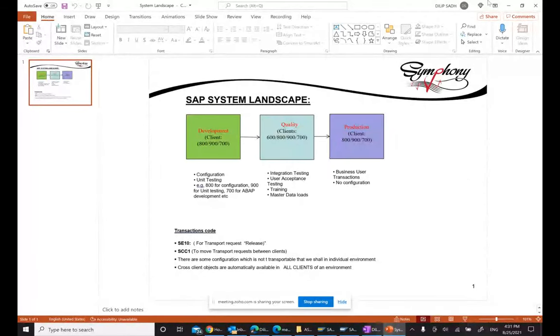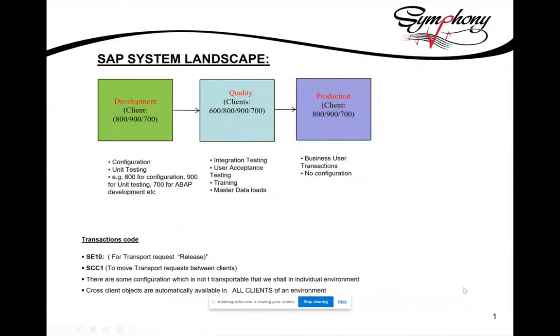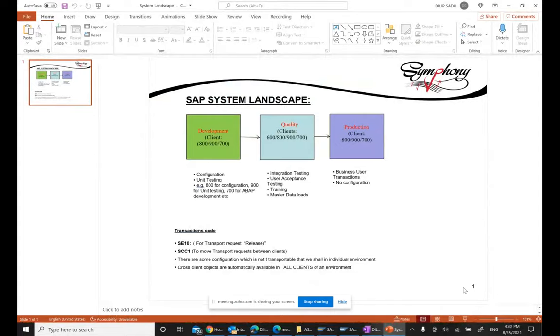Good afternoon everyone, thank you for joining the session. Today I want to talk about a concept called SAP System Landscape. This is a question many students ask about, so I want to do a quick video on it. In the real world, on a project site, you will see that SAP has a three-layer system landscape - you will see three boxes: the development, quality, and production systems.